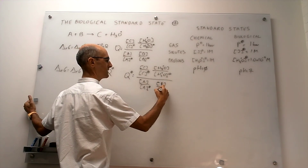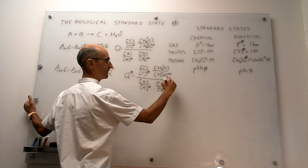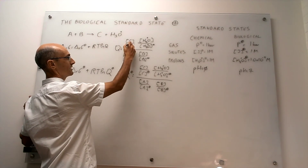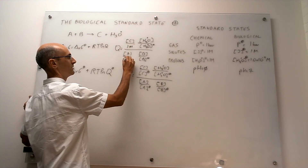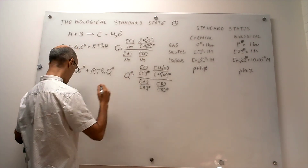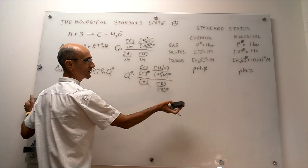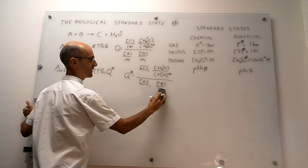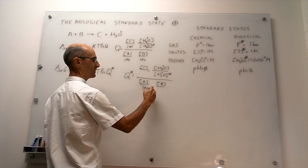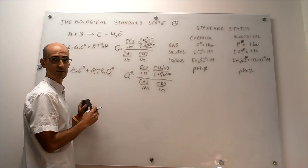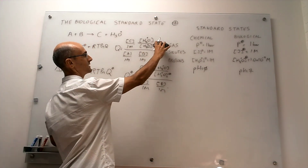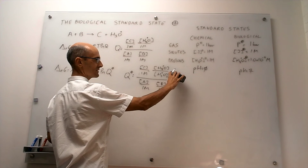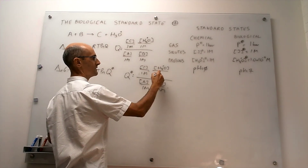Notice that these expressions look the same, and they are, except for the proton reference value. For the biological standard state, all non-proton solute concentrations are still one molar, and the standard pressure for gases is still one bar. The only change is the proton reference: in the chemical standard state that is one molar, while in the biological standard state it is 1.0 × 10⁻⁷ molar.